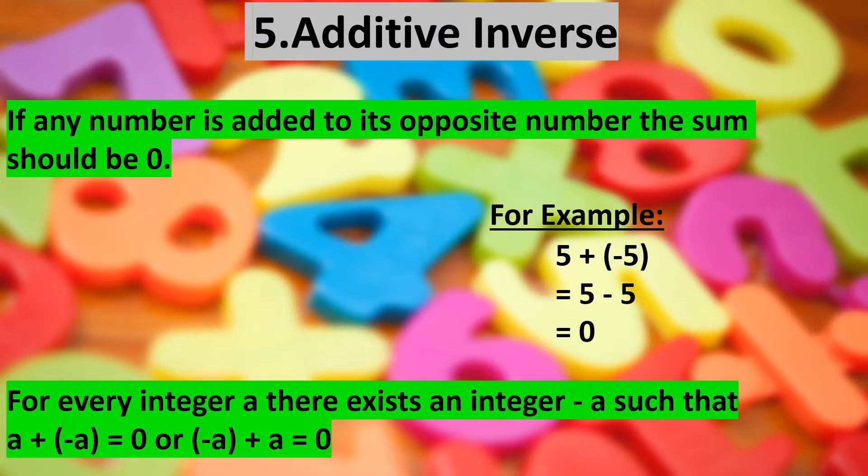Therefore, for every integer A, there exists an integer minus A, such that A plus minus A is equal to 0 or minus A plus A is equal to 0.